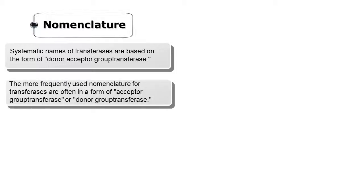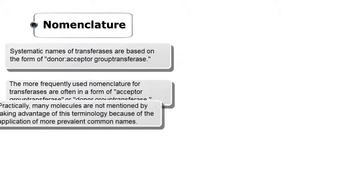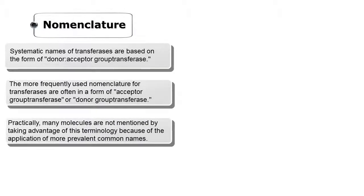EC2 — Transferases. The commonly used nomenclature for transferases is often in the form of 'acceptor group transferase' or 'donor group transferase.' In practice, many molecules are not described using this terminology because of the application of more prevalent common names.